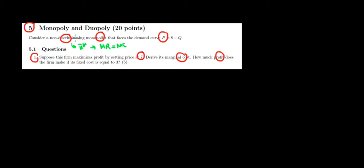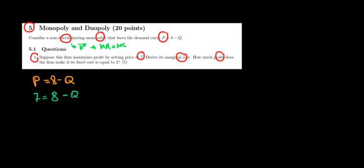When the monopolist is discriminating and knows exactly how much consumers are willing to pay, he adopts a different strategy — but we'll look at that difference in the next video. For now, the price is given as 7 and we have the price function. Since the price is 7 and this is the price function depending on quantity, substituting gives us 7 = 8 minus Q, meaning the quantity that maximizes the monopolist's profit is equal to 1. So the monopolist sells 1 unit on the market.